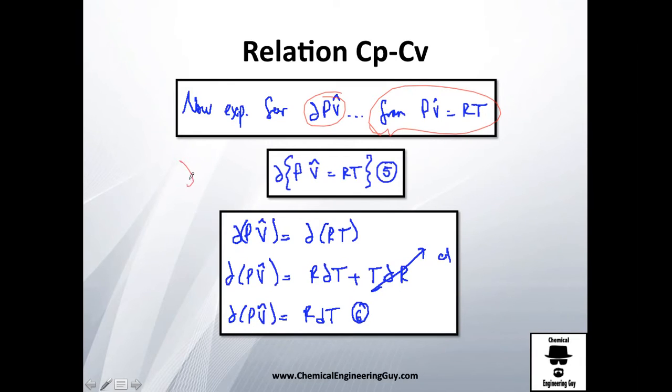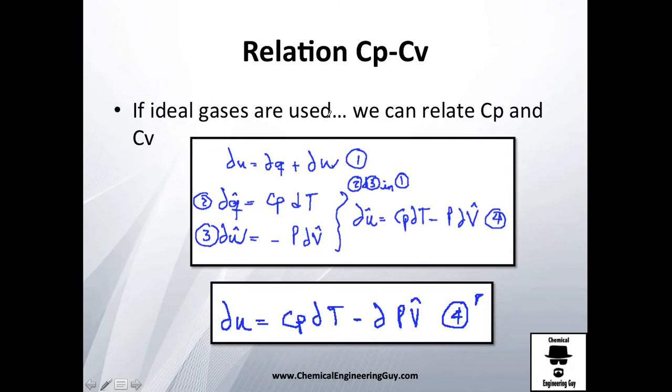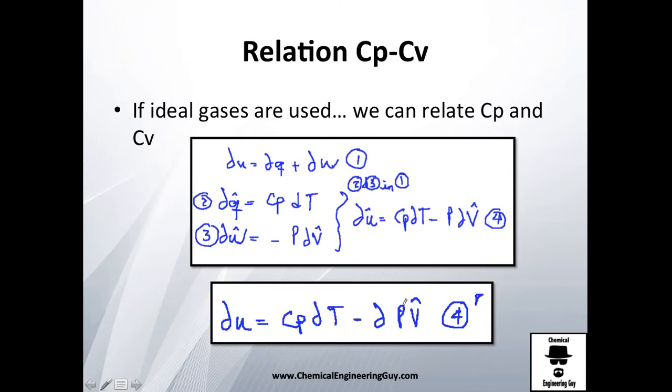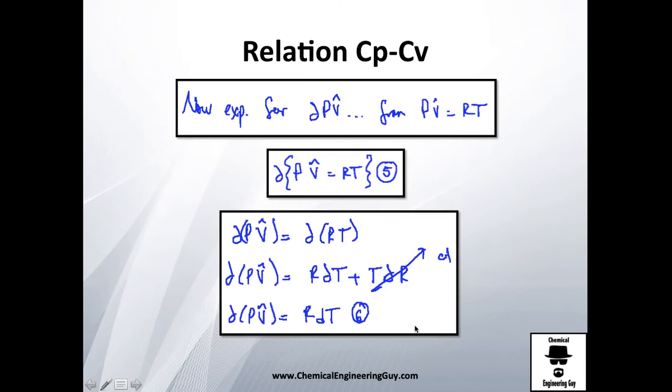You want to get this value from equation four prima, and how do we get that? You may use the first law. You know that PV equals RT, and I'm going to differentiate that and call this equation number five. I'm going to leave the left side alone because that's what I want. What's the point on solving that? I just want to solve the right.